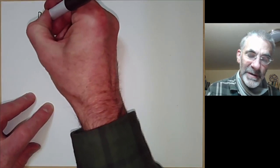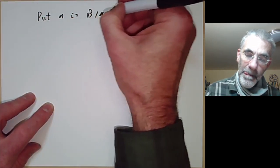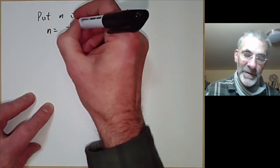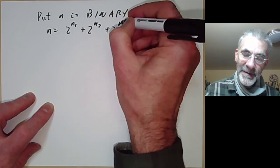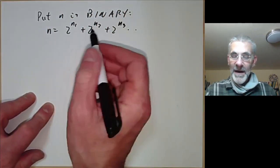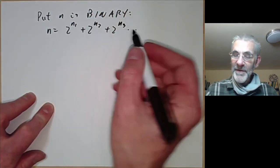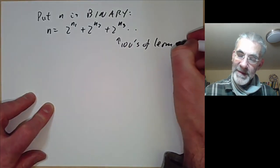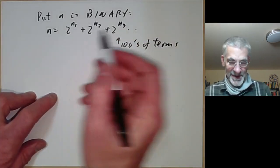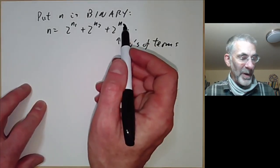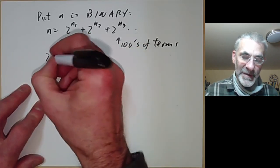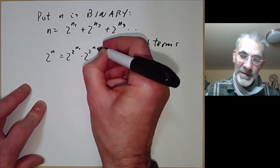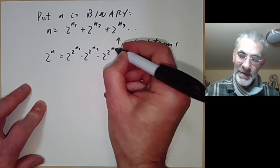The idea is to put n in binary. So we write n equals 2 to the n1 plus 2 to the n2 plus 2 to the n3 and so on. And if n is 10 to the 100, there will be a few hundred terms. It would be a bit of a mess to do by hand, but there's no problem on the computer. And then we notice that 2 to the n equals 2 to the 2 to the n1 times 2 to the 2 to the n2 times 2 to the 2 to the n3 and so on.